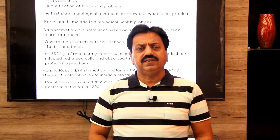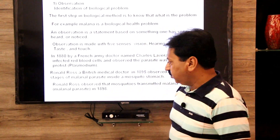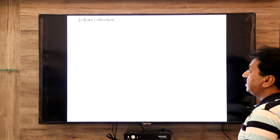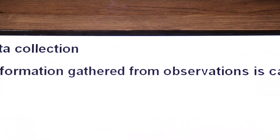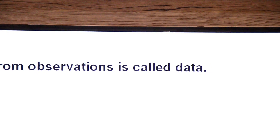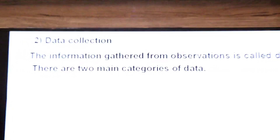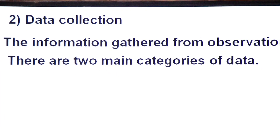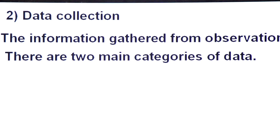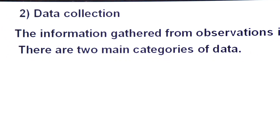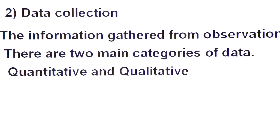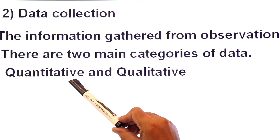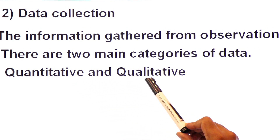The information gathered from observations is called data. The second step is data collection. There are two main categories of data: quantitative and qualitative.